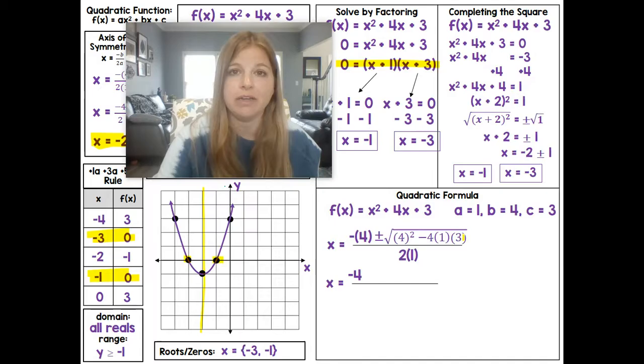Now that becomes -4 ± √(4² is 16, -4 × 1 × 3 is that -12) / (2 × 1 is just 2). This now becomes x = (-4 ± √4) / 2, 16 - 12 is 4 over 2, which then becomes x = (-4 ± 2) / 2, the square root of 4 is 2 over 2.